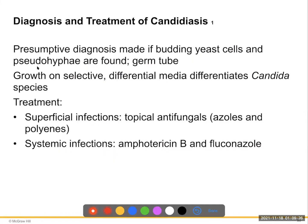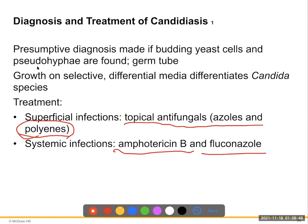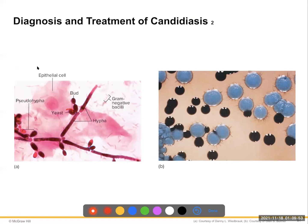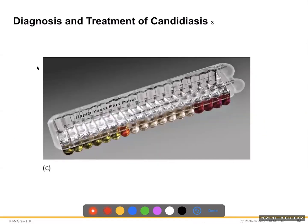Diagnosis of candidiasis is made presumptively when budding yeast cells and pseudohyphae are found. Growth on selective differential media differentiates Candida species. Treatment of superficial infections uses topical antifungals — azoles and polyenes like nystatin and Amphotericin B. Systemic infections are treated with Amphotericin B and fluconazole. Diagnostic plates with different agar in each well show color changes to identify the type of candidiasis present.